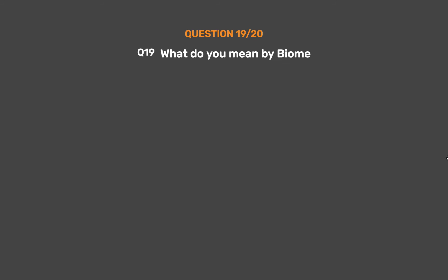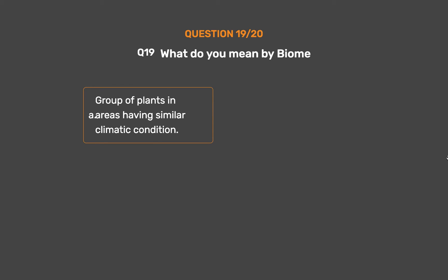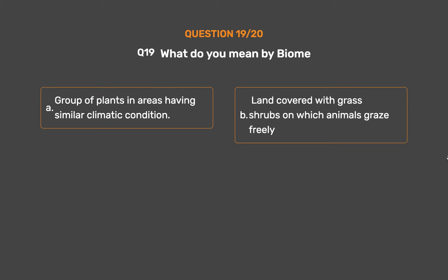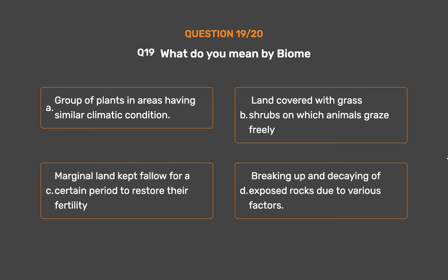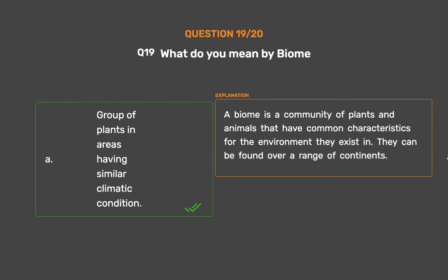Question No. 19. What do you mean by biome? Option A: Group of plants in areas having similar climatic condition. Option B: Land covered with grass shrubs on which animals graze freely. Option C: Marginal land kept fallow for a certain period to restore their fertility. Option D: Breaking up and decaying of exposed rocks due to various factors. The correct answer is Option A: Group of plants in areas having similar climatic condition. A biome is a community of plants and animals that have common characteristics for the environment they exist in. They can be found over a range of continents.